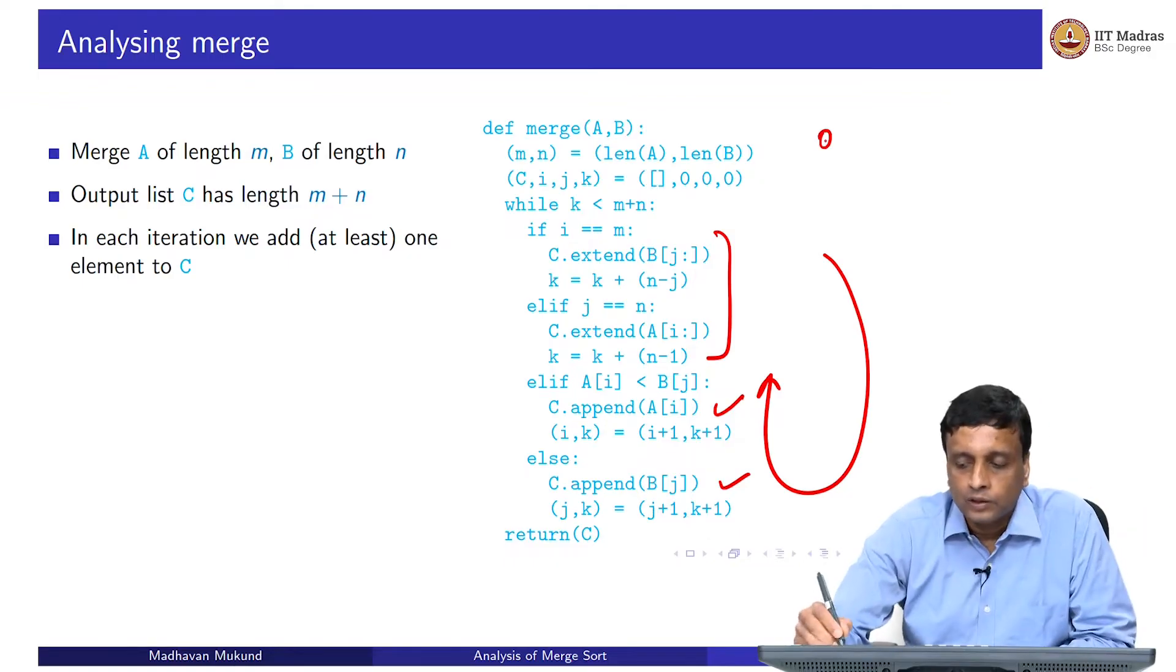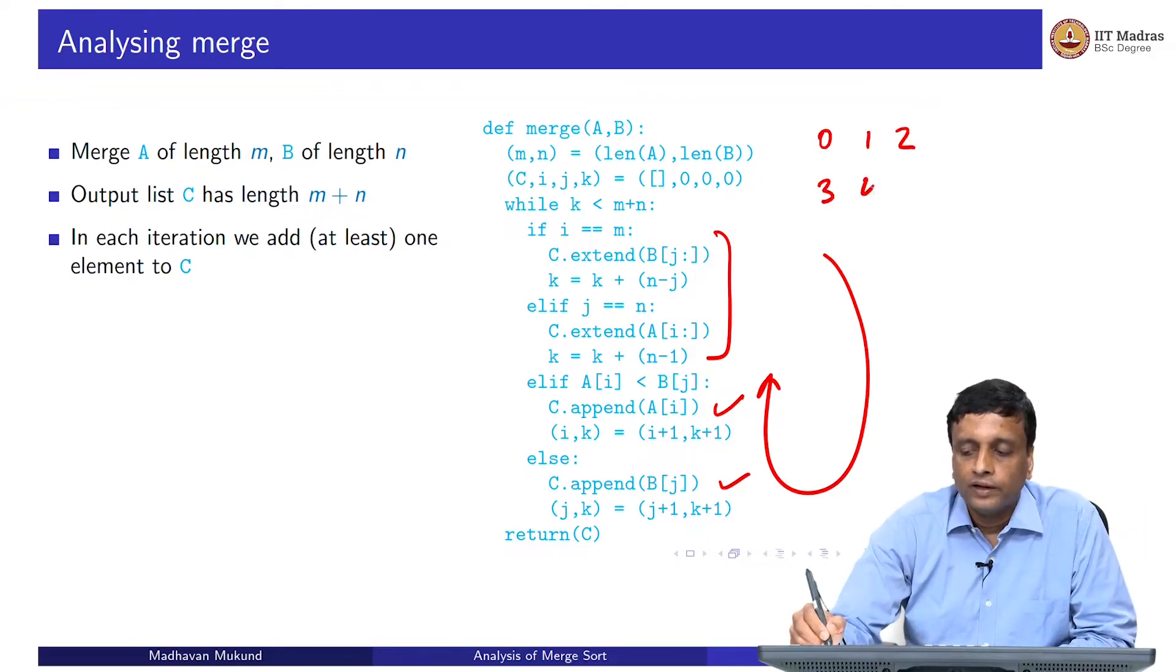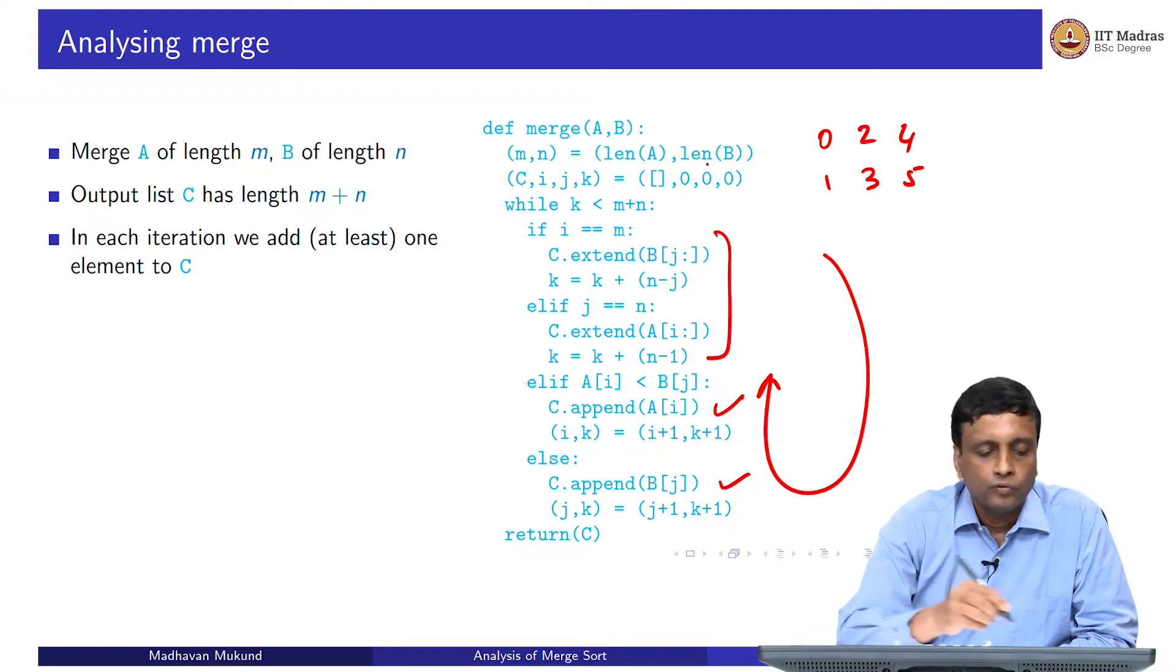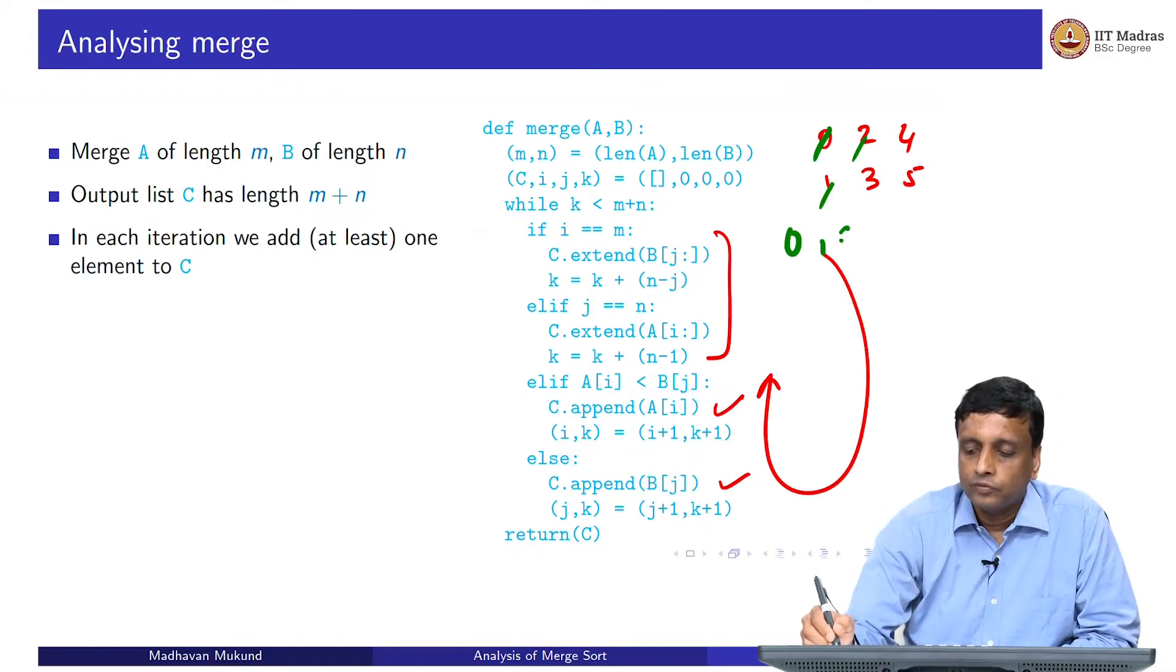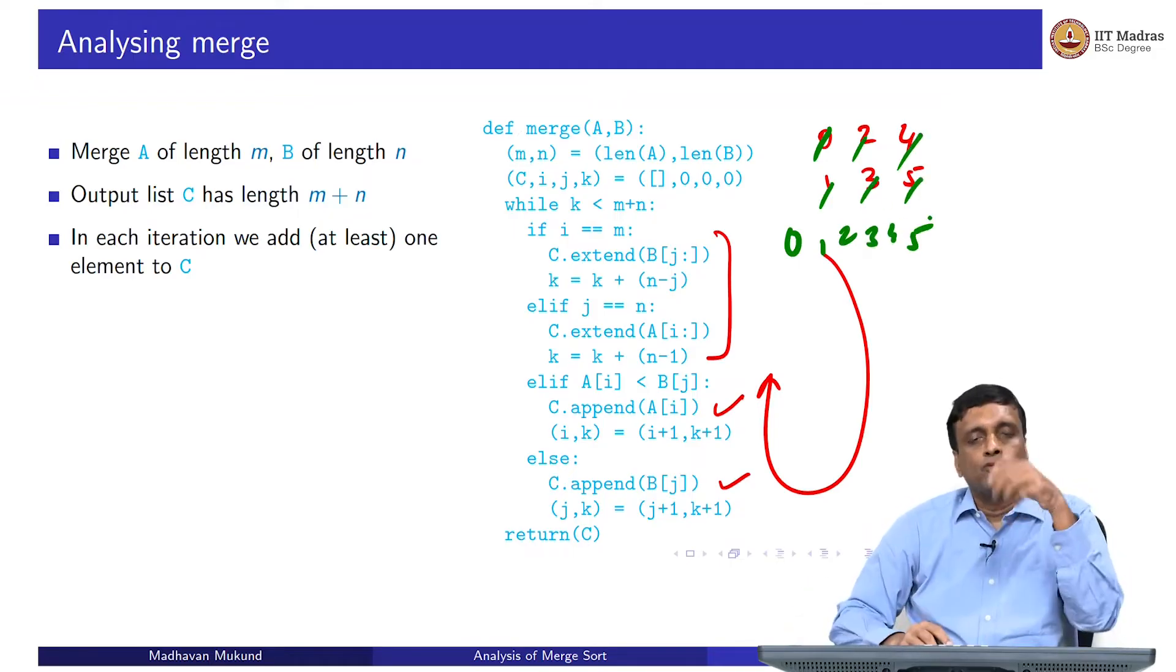I might be alternately moving. If I have something like 0, 2, 4 and 1, 3, 5, then I might move as follows: I will first move the 0, then I will move the 1, then I will move the 2, then I will move the 3, then I will move the 4, and then I will move the 5. So I will only move one at a time.